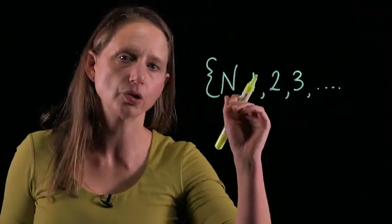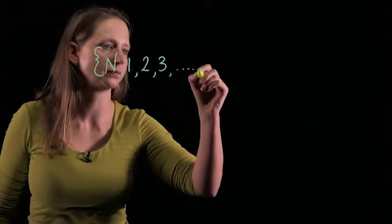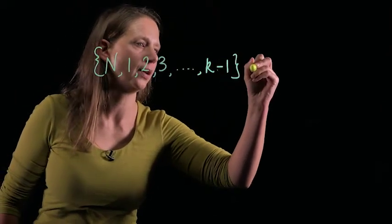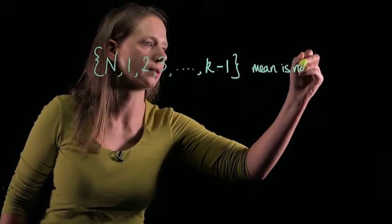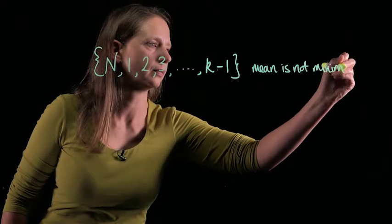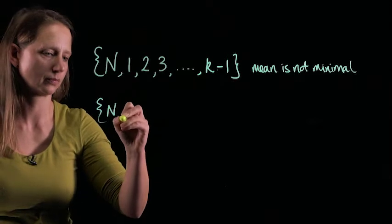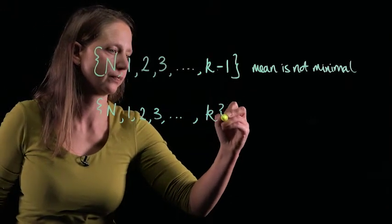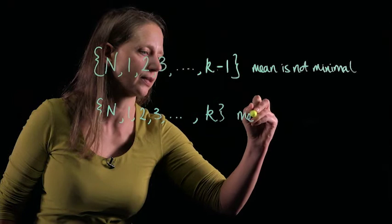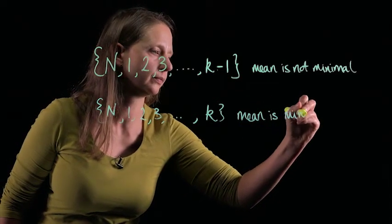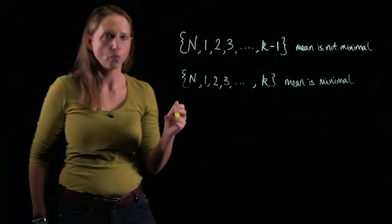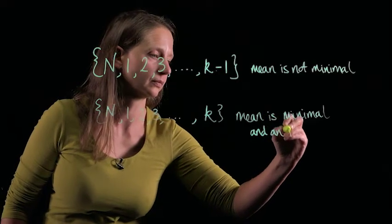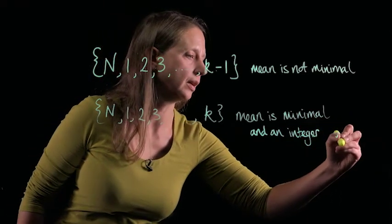So let's consider the point at which the minimum is first hit. Let's say we have a set like this where the mean is not minimal, but when we go up to k, we hit the minimal mean for the first time. The mean is minimal. And because we're looking for this situation in the question, let's say that this mean is also an integer.